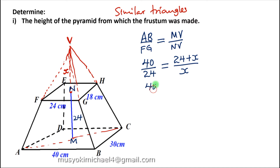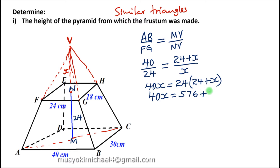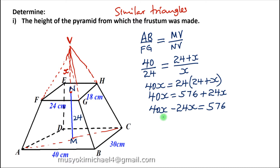Then from this point we cross-multiply. So 40 times X, which is 40X, will be equal to 24 times bracket 24 plus X. So we end up getting 40X equals 24 times 24, that is 576, plus 24X. Therefore 40X minus 24X gives 16X equals 576. Then divide both sides by 16, so X equals 576 divided by 16, giving us 36 cm.